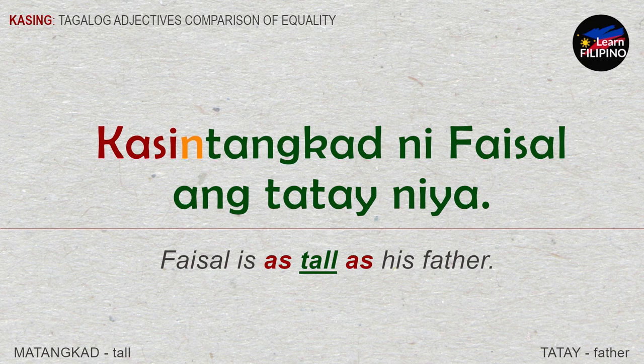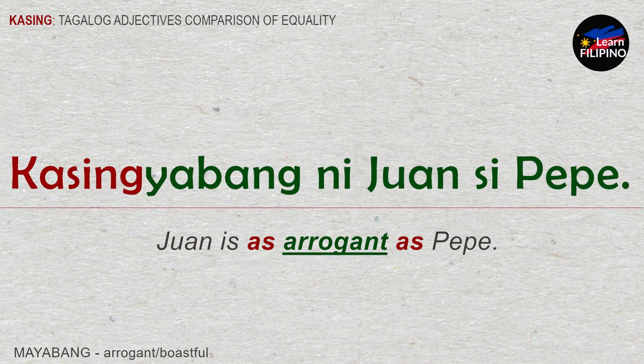'Kasintangkad ni Faisal ang tatay niya.' Faisal is as tall as his father. 'Kasingyabang ni Juan si Pepe.' Juan is as arrogant as Pepe.